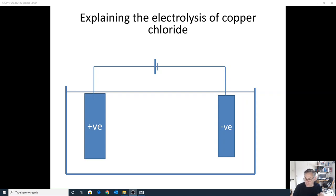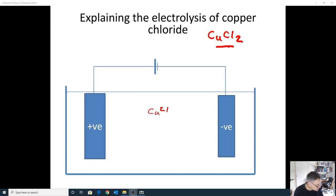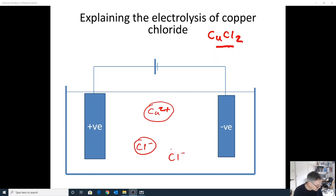We're going to explain how we get copper formed at the negative electrode and how we get chlorine gas formed at the positive electrode. Copper chloride solution is a blue solution and copper chloride is CuCl₂. Going back to our knowledge of ionic compounds, copper chloride is ionic. Chlorine has got to be one minus, so copper has got to be two plus. It contains Cu²⁺ ions and two Cl⁻ ions.